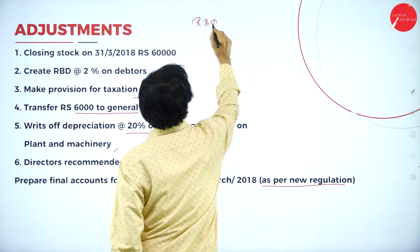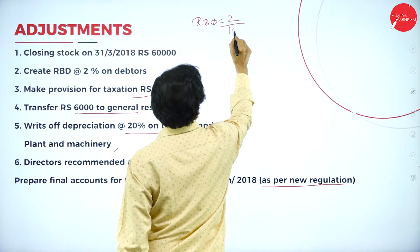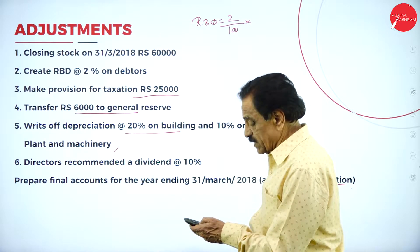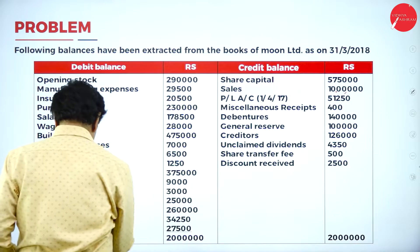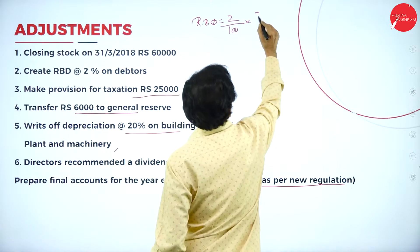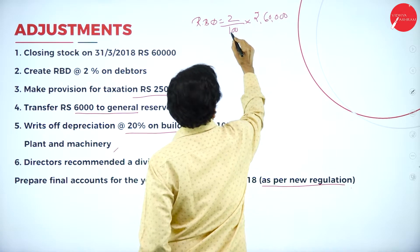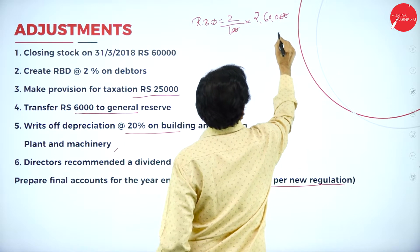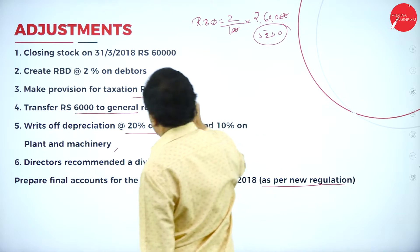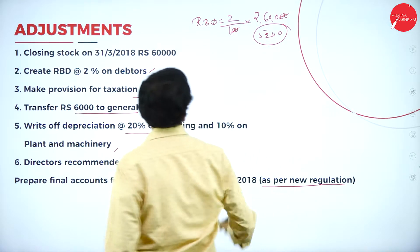First, we calculate RBD. RBD percentage is 2 percent. So: 2 divided by 100 into debtors figure. Debtors here are ₹2,60,000. So 2% of ₹2,60,000 equals ₹5,200. This amount gets transferred.